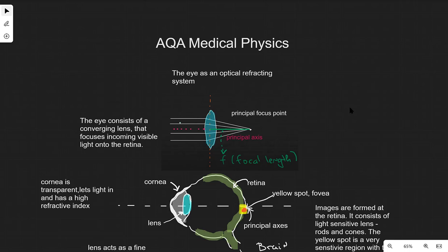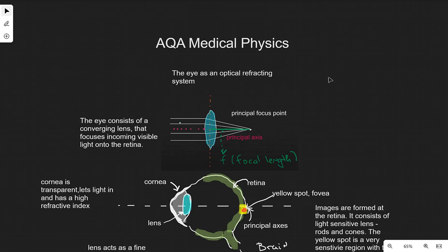Let's revise some AQA medical physics. We're going to start off by looking at the eye as an optical refracting system. In order to really understand the eye, we need to understand lenses first.